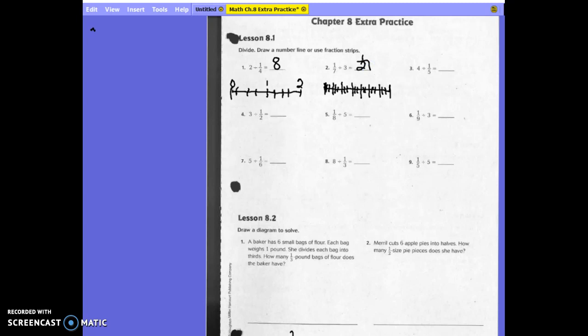I want you to draw a diagram for, circle these, 3, 4, and 5. I want you to draw your number line. The rest you can multiply using an equation.